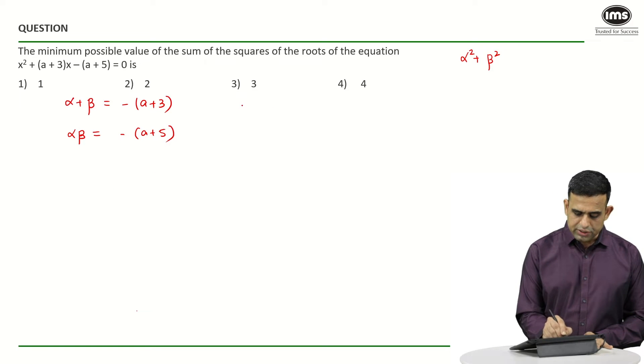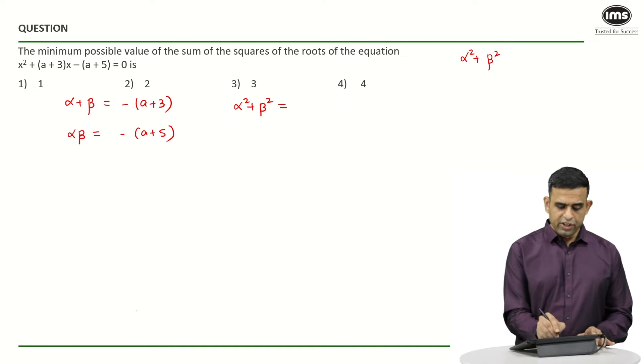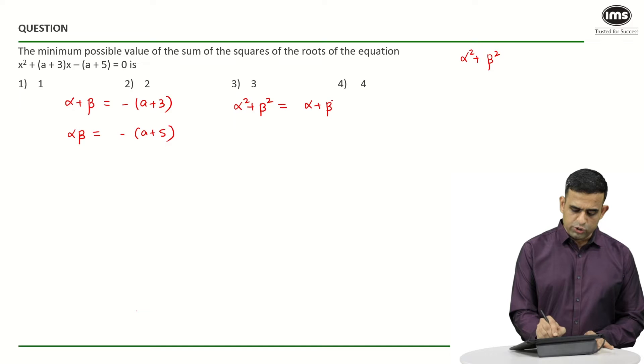So if I look at the expression α² + β², which I want to minimize, it will be (α + β)² - 2αβ.